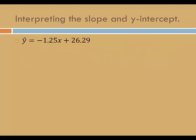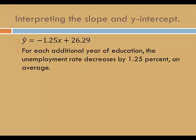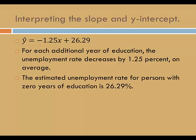Our regression equation is y-hat equals negative 1.25x plus 26.29. The slope is negative 1.25. That means that for each additional year of education, the unemployment rate decreases by 1.25 percent on average. And according to the y-intercept, the estimated unemployment rate for persons with 0 years of education is 26.29 percent.